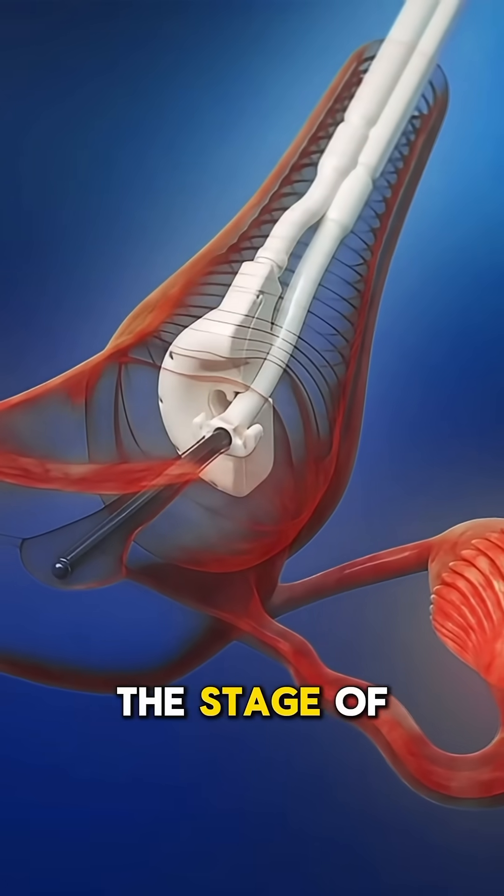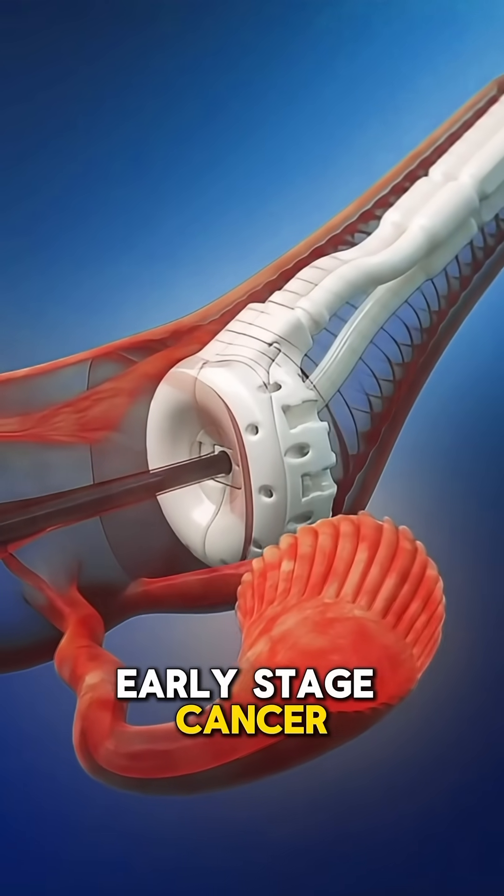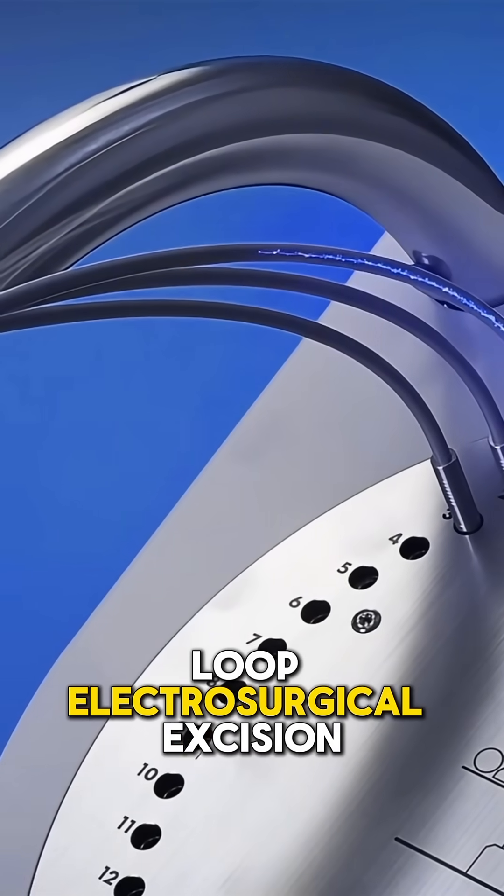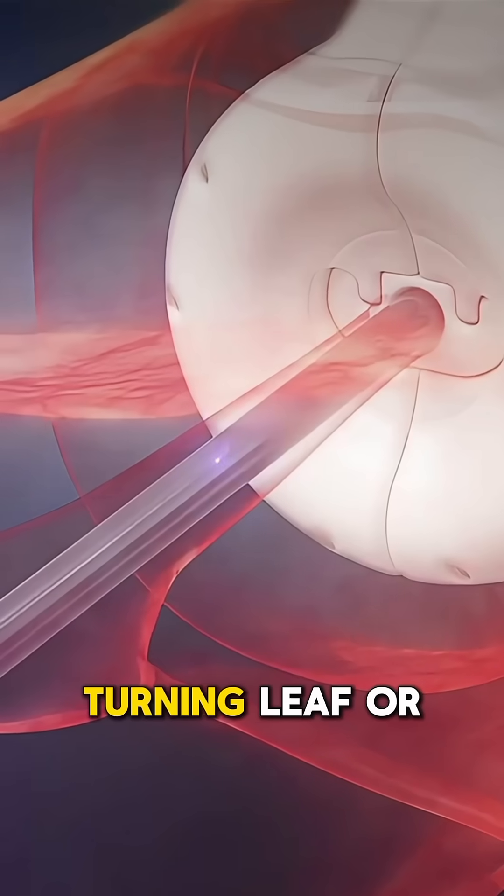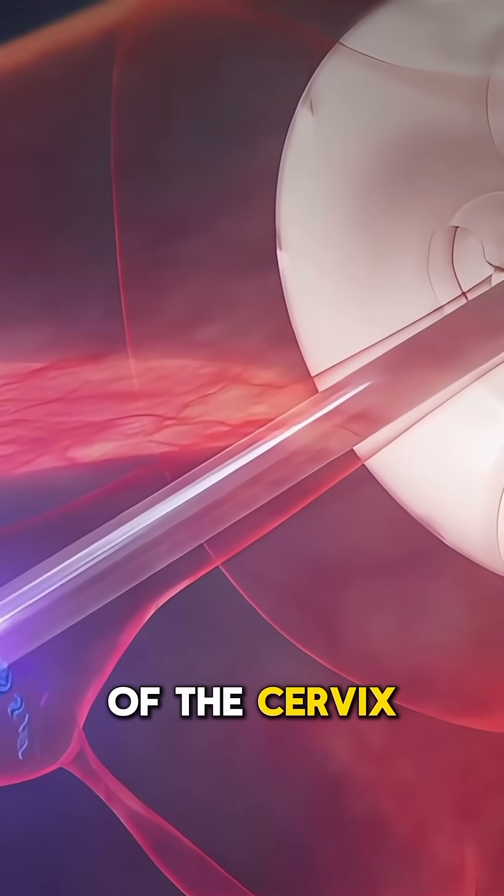The type of procedure depends on the stage of cancer. For certain early stage cancers, a cone biopsy or loop electrosurgical excision procedure (LEEP) is performed, where a small cone-shaped portion of the cervix is removed.